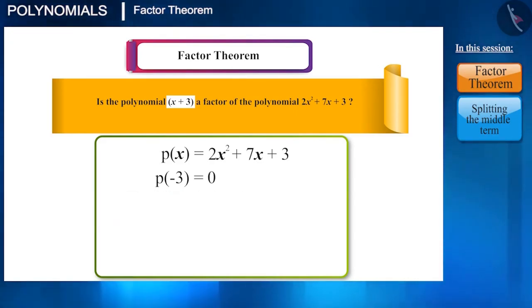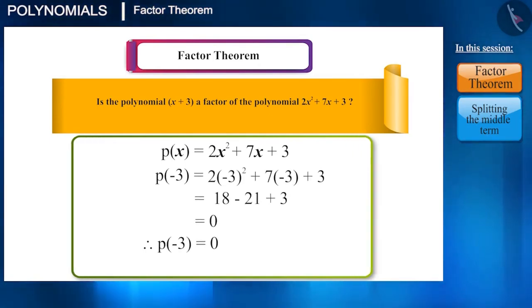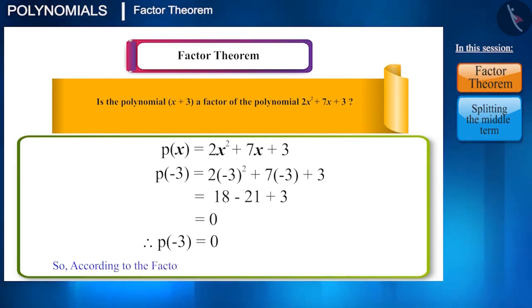That is, if we write the polynomial this way, we have to check whether p(minus 3) is 0 or not. So let's check it. Now we can say that, according to the factor theorem, x plus 3 is a factor of this polynomial.